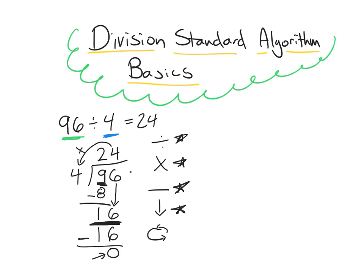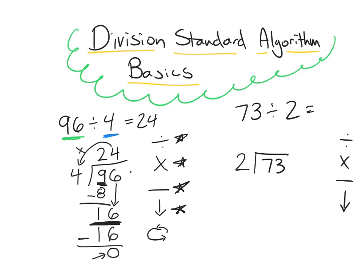Let's do one more example, going through the steps a bit quicker while talking through them. I'm going to do a two-digit divided by a one-digit problem: 73 divided by 2. I'm choosing this problem because it's going to have a remainder, so we can see what happens in that case. I'll rewrite the four steps next to the problem so I can remember what I'm doing. Writing it in standard algorithm form: 73 on the inside, 2 on the outside. I start by looking at the 7.